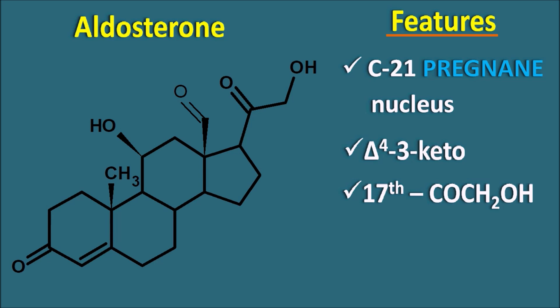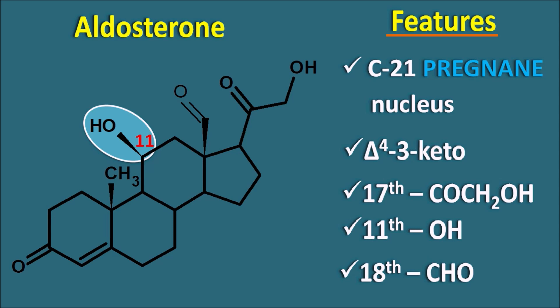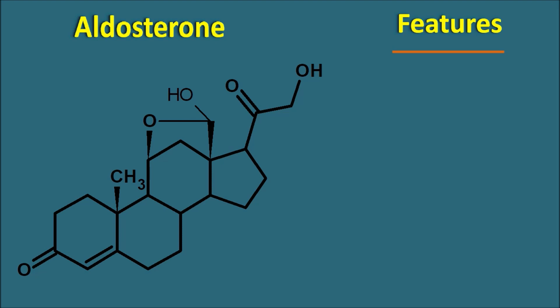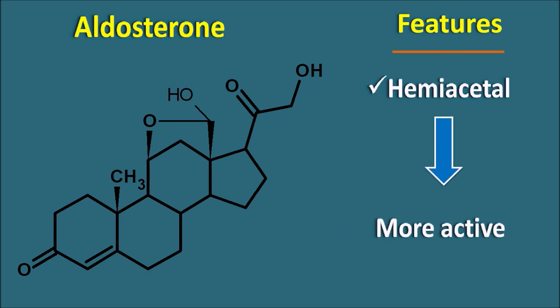Apart from these structural features, two other features are more important. At the 11th position, there is a hydroxyl group, and at the 18th position, where normally in steroids there is a methyl group, in aldosterone there is an aldehyde functional group. So aldosterone is an aldehyde-containing steroid with a C21 pregnane nucleus. Because of the presence of the OH group at the 11th position — which is somewhat near to the aldehyde functional group at the 18th position — these two groups can interact and form a hemiacetal. This hemiacetal form is readily formed and is the more active form of aldosterone.